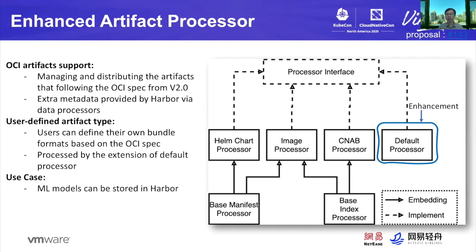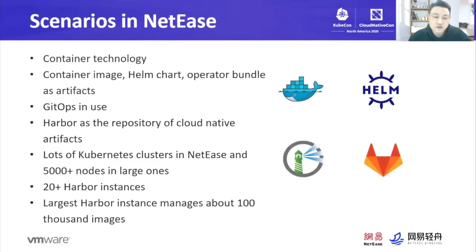I'd like to pass it to Mingming for sharing his experience in artifact management at NetEase. I'm Mingming from NetEase. Today I will introduce how we manage artifacts at NetEase. Container technology is widely used at NetEase — we use container images, Helm charts, Operator bundles, etc. as artifacts. GitOps is also used in production and we use Harbor as the repository of cloud-native artifacts. There are lots of Kubernetes clusters at NetEase, with 5,000-plus nodes in larger ones. We have more than 20 Harbor instances, and the largest manages about 100,000 images.